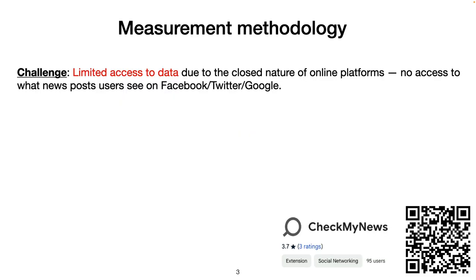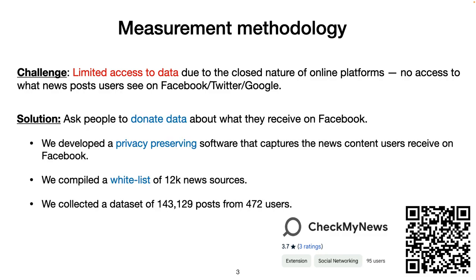Therefore, the first challenge we address is getting past this limitation and building a measurement approach that provides a precise view on users' exposure to news on social media. Our approach is based on people donating data about what news they receive on Facebook, and to automate this data donation, we have developed a privacy-preserving Chrome extension that monitors a list of over 12,000 news sources that we have compiled for this purpose.